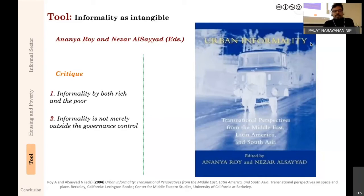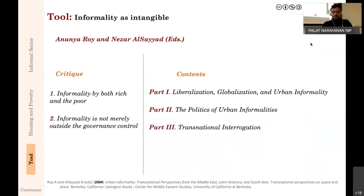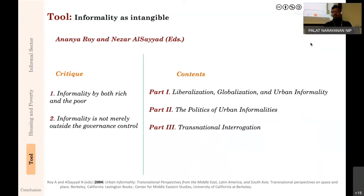Another critique Roy and AlSayyad make: informality is not merely outside governance control. The argument from classmates that 'we need the government to be very present' is challenged here. When you see a slum, it is not because the government didn't do enough—it's much more than that. Their work is important also because of Sassen's global cities framework; the book is organized in three parts: liberalization, globalization, and urban informality; the politics of urban informality; and transnational interrogation—how to study urban informality across national contexts, across North-South divide.